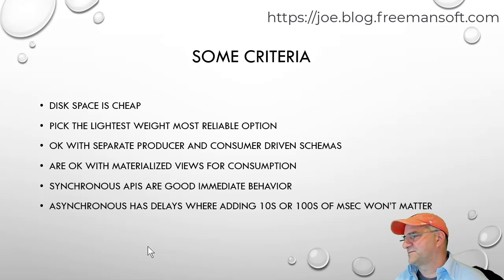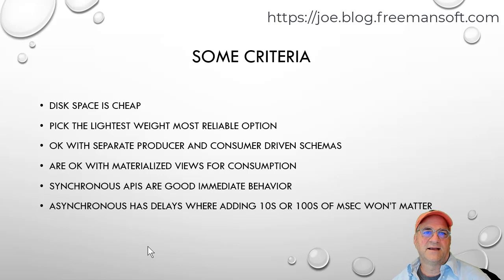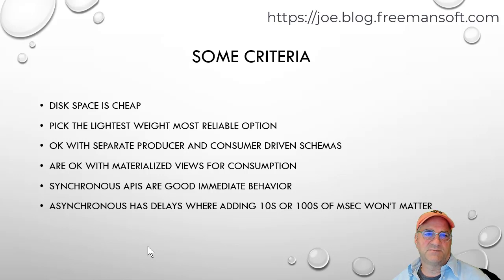Some of the criteria we're going to use: I want to claim disk is cheap, relatively speaking. So if we have redundant data — redundant copies of that data — I'm not sure I care anymore as long as it's not ridiculous. We're going to pick the lightest weight, most reliable option. In some cases we might actually put events in a database that has a streaming messaging output coming out the back. In that case, my system only needs to talk to the database twice: once for the data and once for the events — fewer things to manage for downtime and removing dependencies.